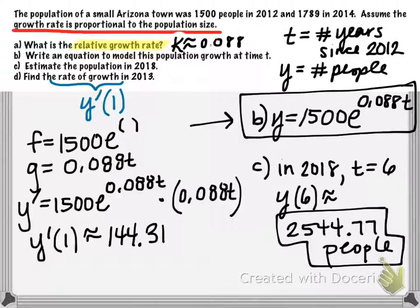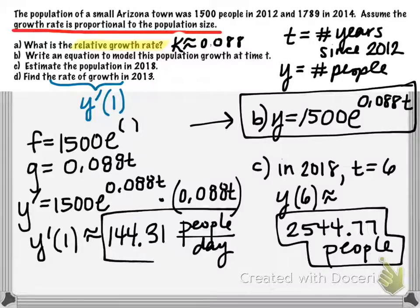Now remember, this value here, this is not a population. This is not the number of people, because this was the derivative. This is the rate of change of the population. So our units here would be people per day. This is how fast the population in this small town was changing in the year 2013. This little town was increasing, the population was increasing at a rate of about 144 people per day in the year 2013.